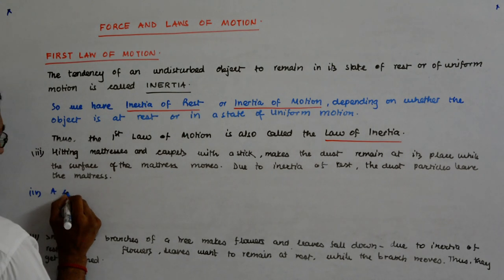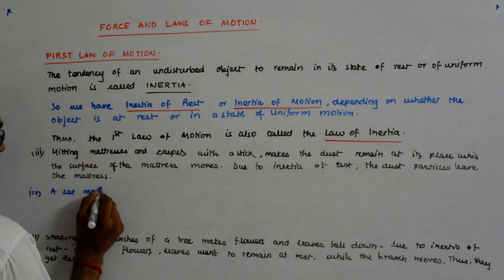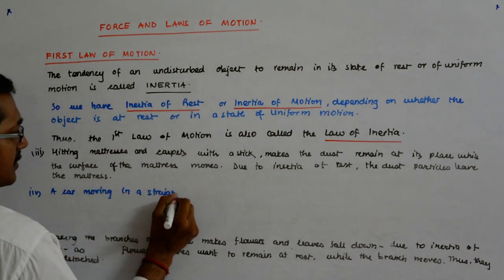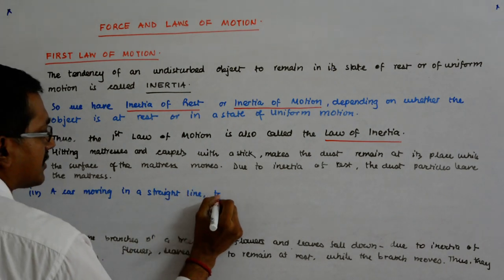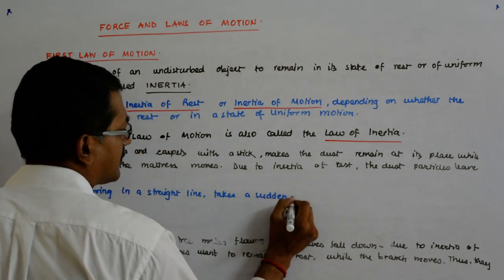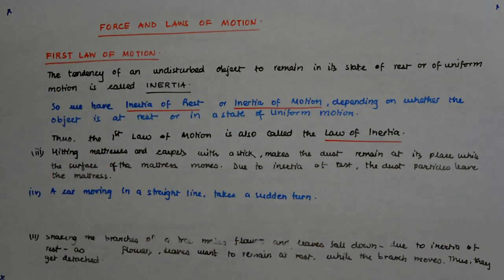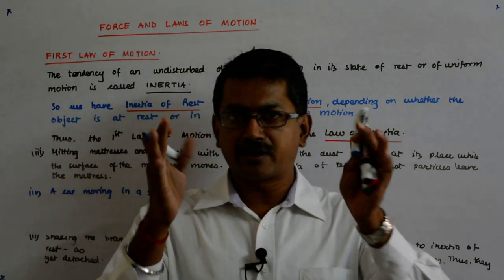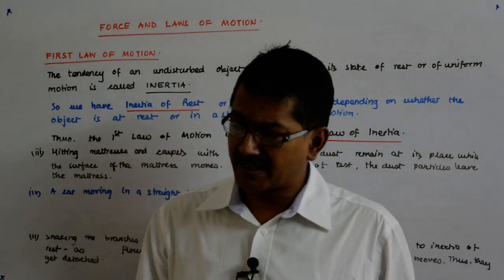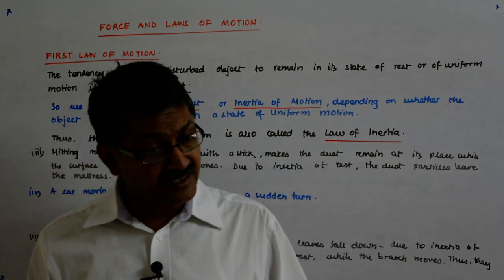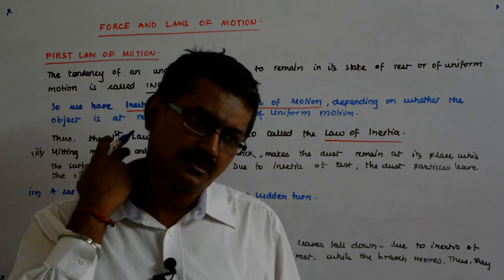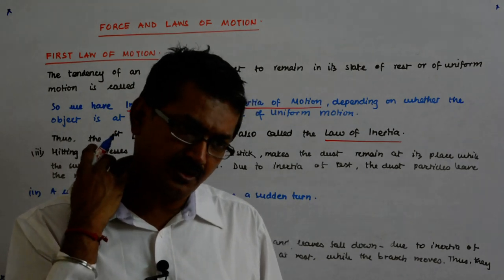The fourth example: a car moving in a straight line takes a sudden turn. Now, the inertia of motion includes both the magnitude as well as the direction, because velocity is a vector quantity. So if anything changes, the motion will be said to be changed.